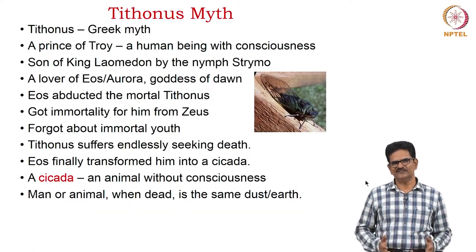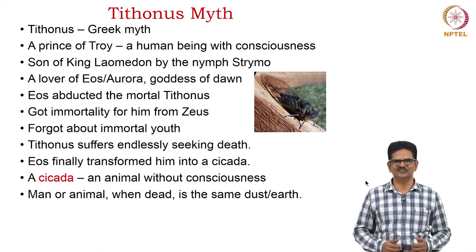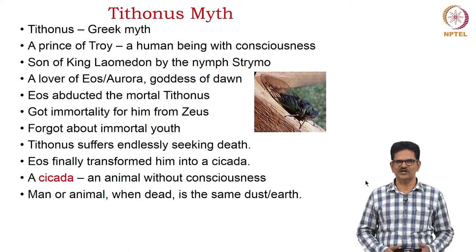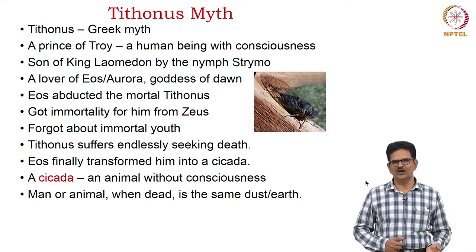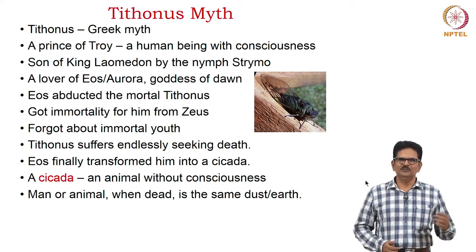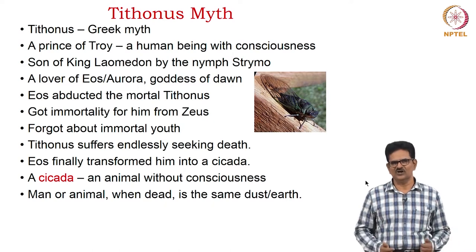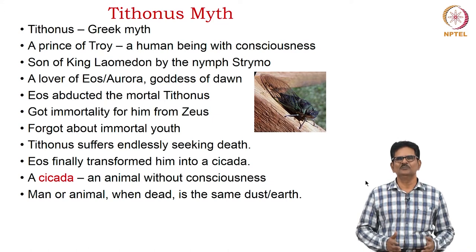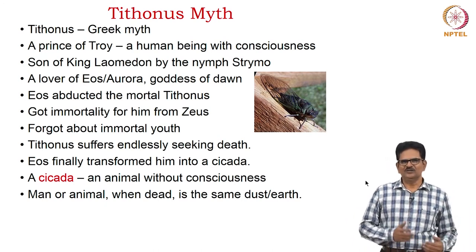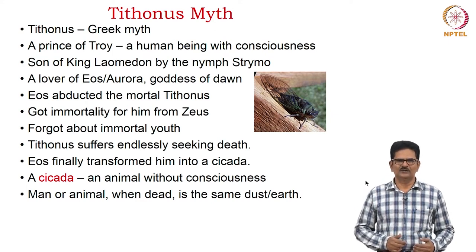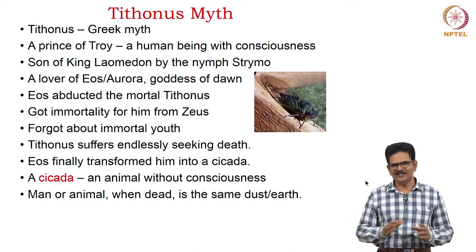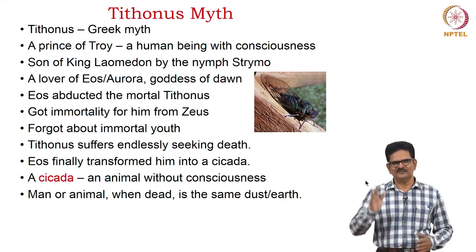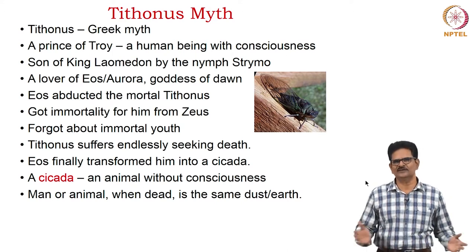The poem we have chosen is called Tithonus and it is based on a Greek myth. Tithonus was a prince of Troy and a human being with consciousness. He was the son of King Laomedon by the nymph Strymo. He became a lover of Aurora, or Eos, the goddess of Dawn. This goddess of Dawn abducted the mortal Tithonus because she was so much in love with him. Tithonus got immortality from Zeus through Aurora, but he forgot to ask about immortal youth. So Tithonus suffers endlessly, desiring death. Eos or Aurora finally transformed him into a cicada — an insect.